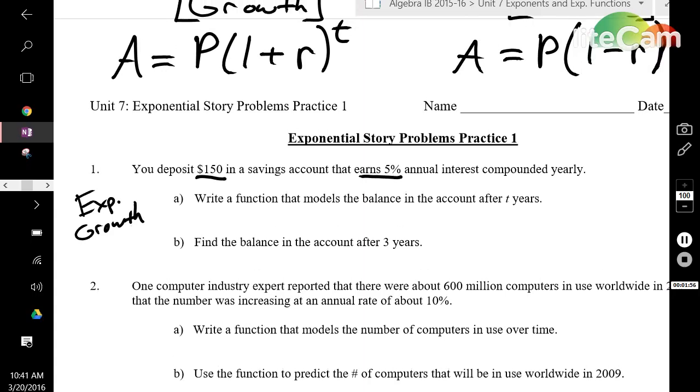It's important to identify this before you choose your function because they are different functions fundamentally. One is 1 plus r, one is 1 minus r. One has a b value larger than 1, one has a b value less than 1. So we're going to choose the growth function: A equals P times (1 plus r) to the power of t.